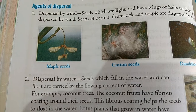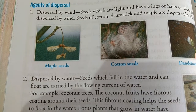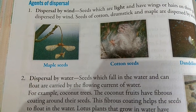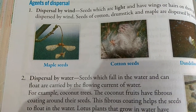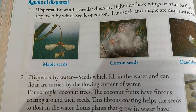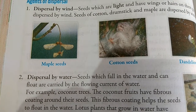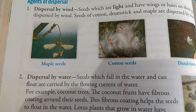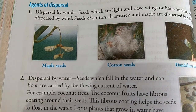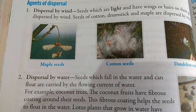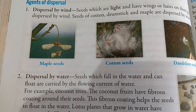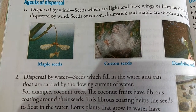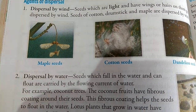Number 1: Dispersal by wind (air). Example: dandelion seeds, cotton seeds, etc. Seeds which are light and have wings or hairs on them get dispersed by the wind.